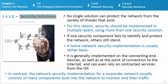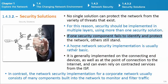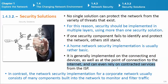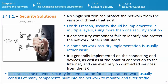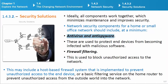Security solutions: No single solution can protect the network from the variety of threats that exist. For this reason, security should be implemented in multiple layers, using more than one security solution. If one security component fails to identify and protect the network, others still stand. A home network security implementation is usually rather basic — it is generally implemented on the connecting end devices and at the point of connection to the Internet. Network security components for a home or small office network should include, at a minimum: antivirus and antispyware, used to protect end devices from becoming infected with malicious software; and firewall filtering, used to block unauthorized access to the network.